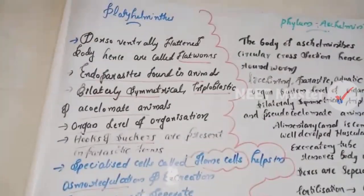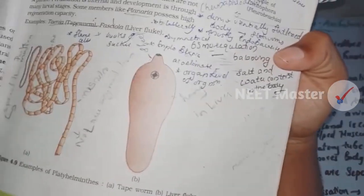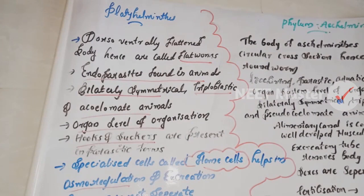This completes phylum Platyhelminthes. In the textbook, figure 4.9 shows the dorsoventrally flattened body. Next, we move to phylum Aschelminthes.